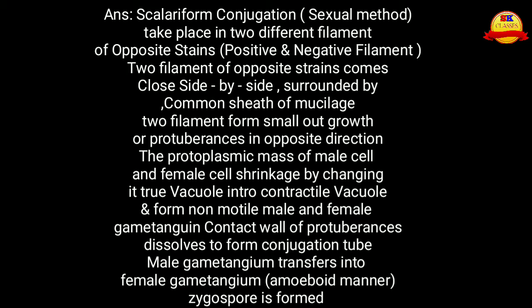The male gametangium transfers into the female gametangium in an amoeboid manner, and due to the fusion of these two, a zygospore forms — which is a thick-walled diploid structure formed after the fusion of the male gametangium and the female gametangium. In this way, the zygospore forms.